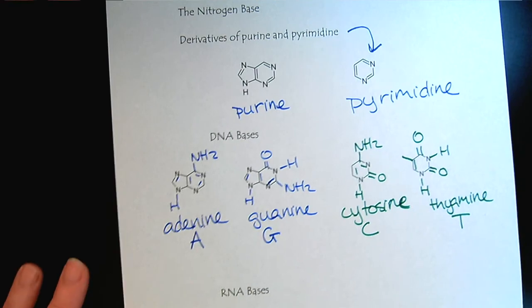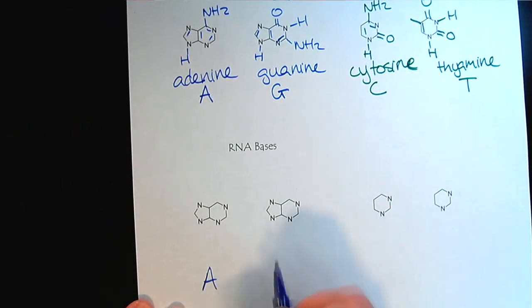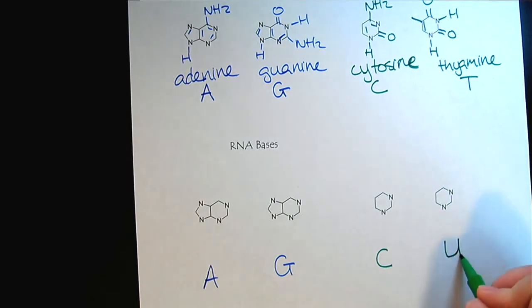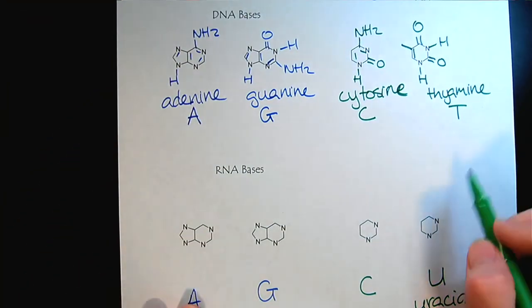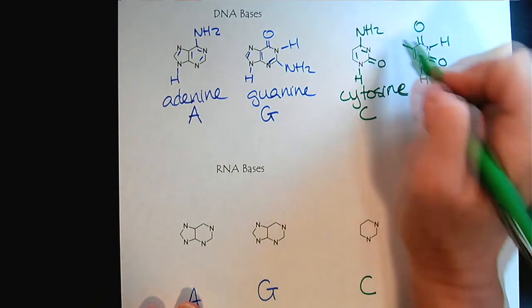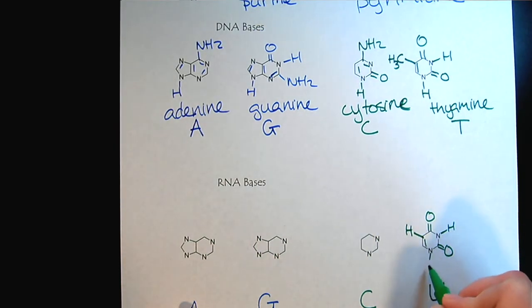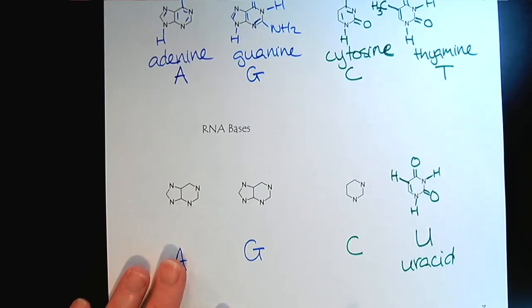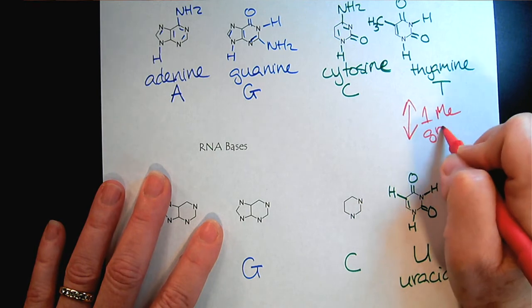For the RNA nitrogenous bases, they are mostly the same. Adenine's the same, guanine's the same, and cytosine's the same. But there is no thymine - it's uracil. Let's focus on the differences between thymine and uracil. It's almost identical, except up here this is a methyl group and here it's a hydrogen. So there is a one methyl group difference between the two.